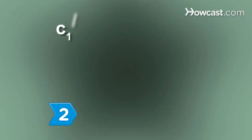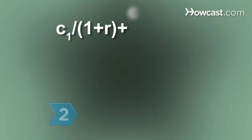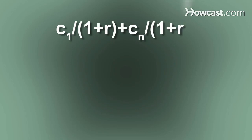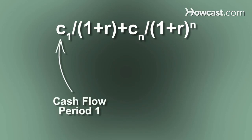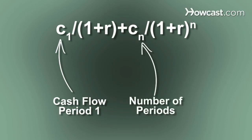Step 2. Calculate the present value of your investment over a period of time using the equation C sub 1 divided by 1 plus r, plus C sub n divided by 1 plus r to the nth power, where C sub 1 is the cash flow in period 1, n is the number of periods, and r is the discount rate.